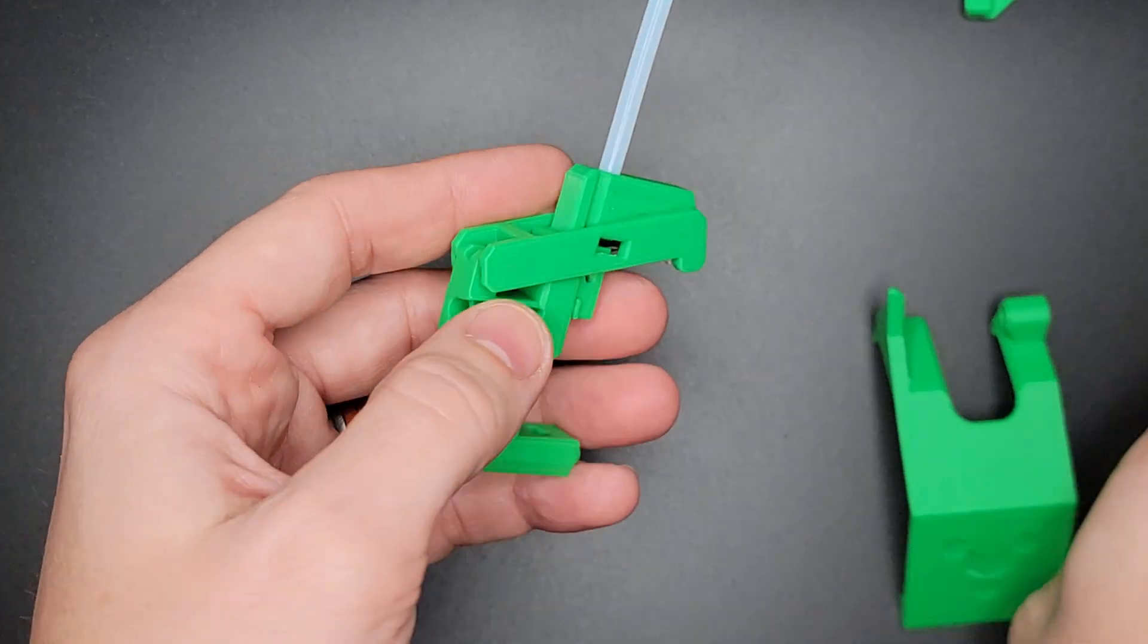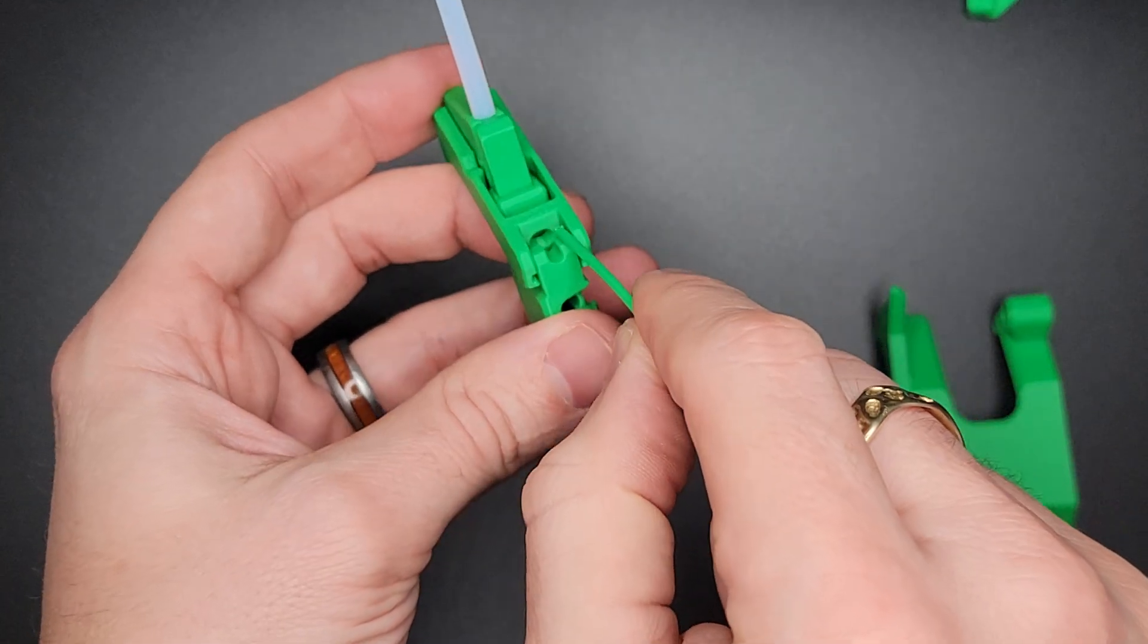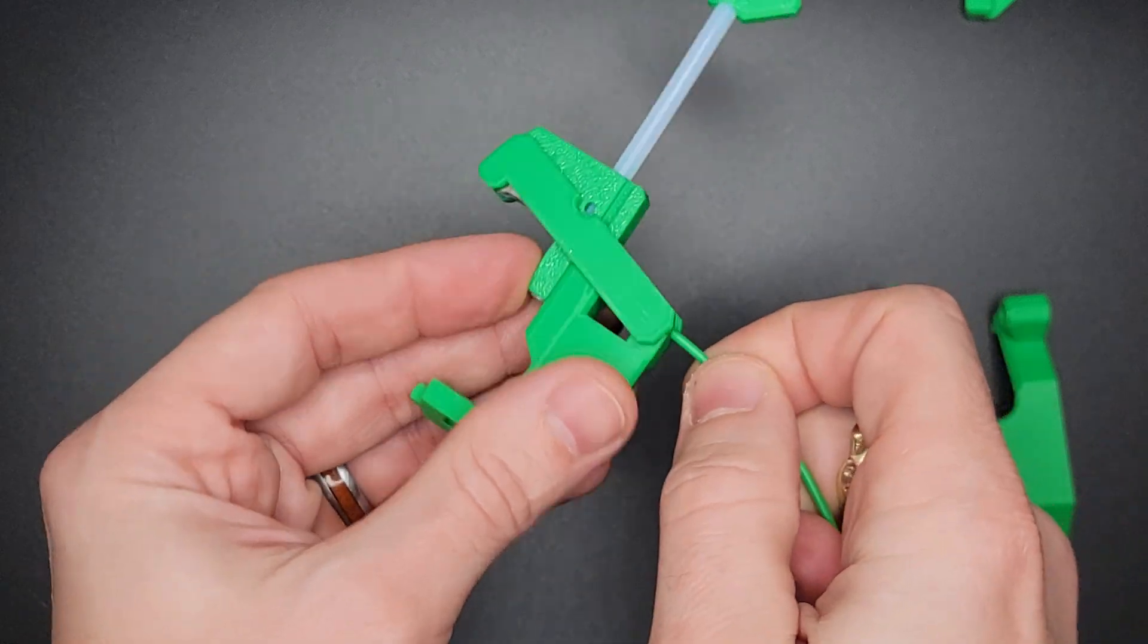To remove the arm, stick a piece of filament in this hole here and push up.